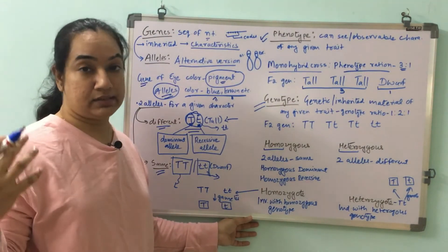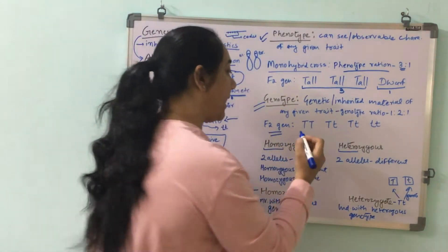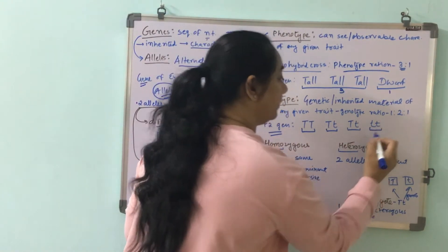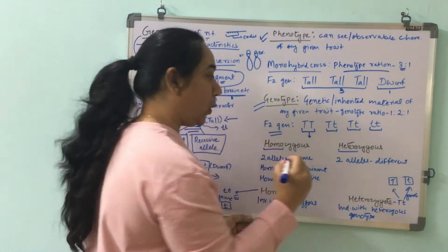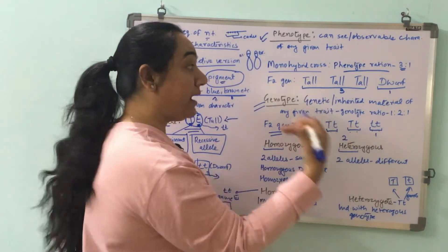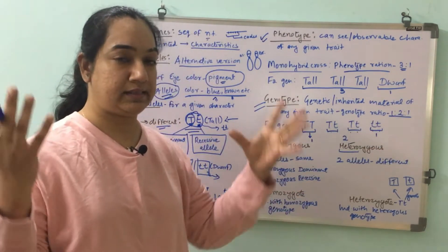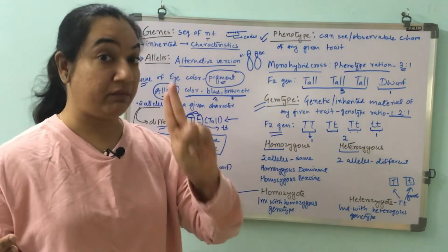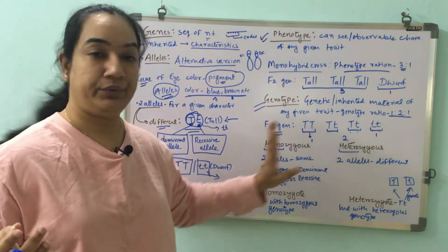When you look at the genetic composition behind it, in the F2 generation for tall plants there was one plant with both dominant alleles, two plants with one dominant and one recessive allele, and one plant with both recessive alleles. So the genotypic ratio was 1:2:1. For the dwarf plant both alleles were recessive; for the tall plants, one had both dominant alleles and two had a mix of dominant and recessive — and because a dominant allele is present, it does not let the recessive allele express.